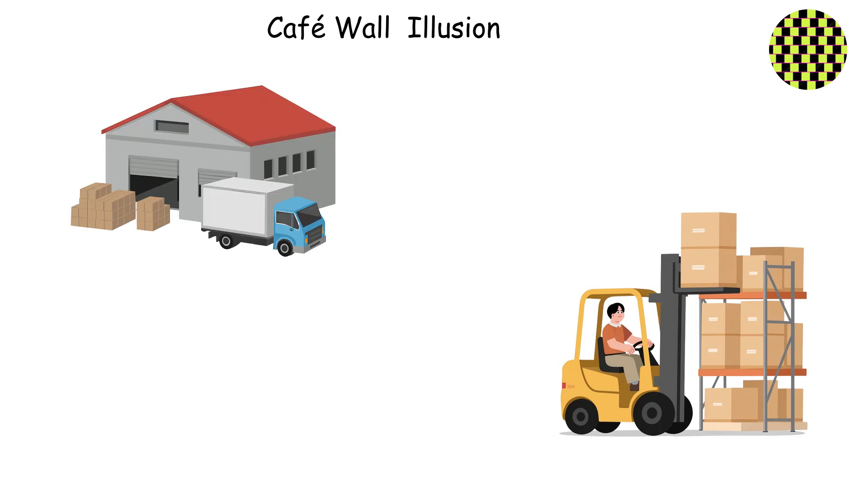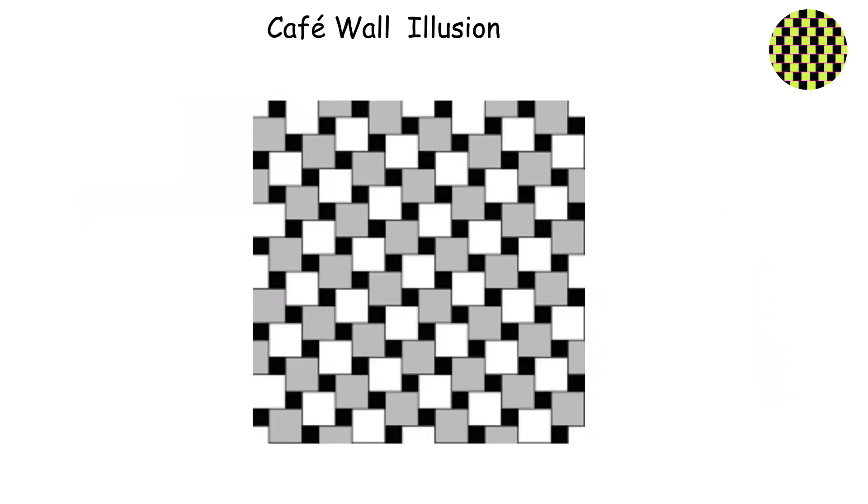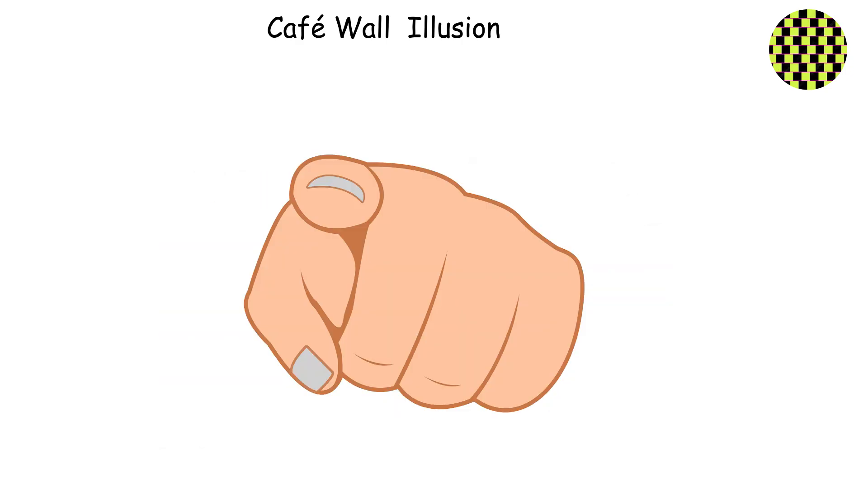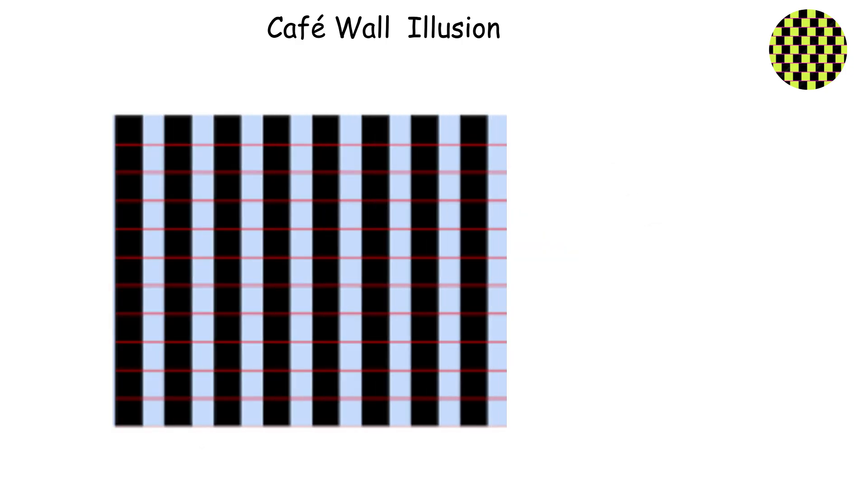The Café Wall Illusion. Imagine you're stacking boxes in a warehouse and you're absolutely certain the shelves are tilted and about to collapse. You grab your level to check, only to discover everything is perfectly straight.